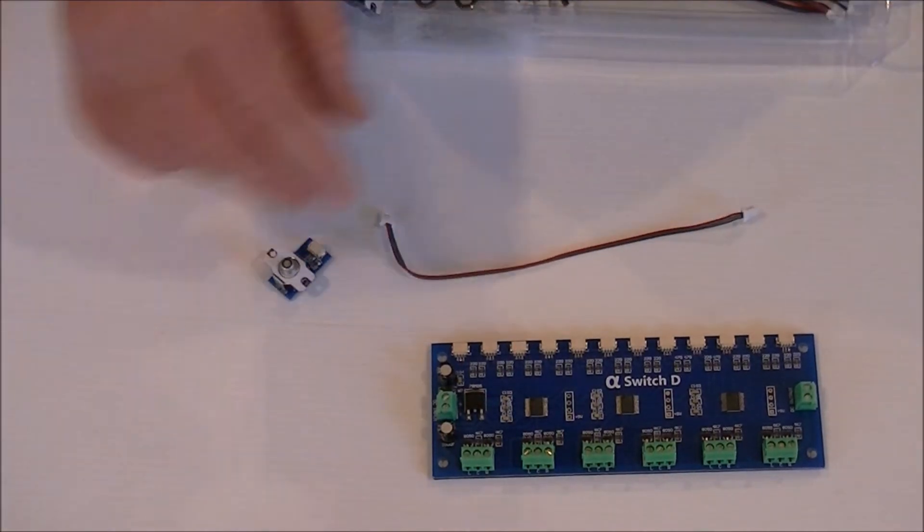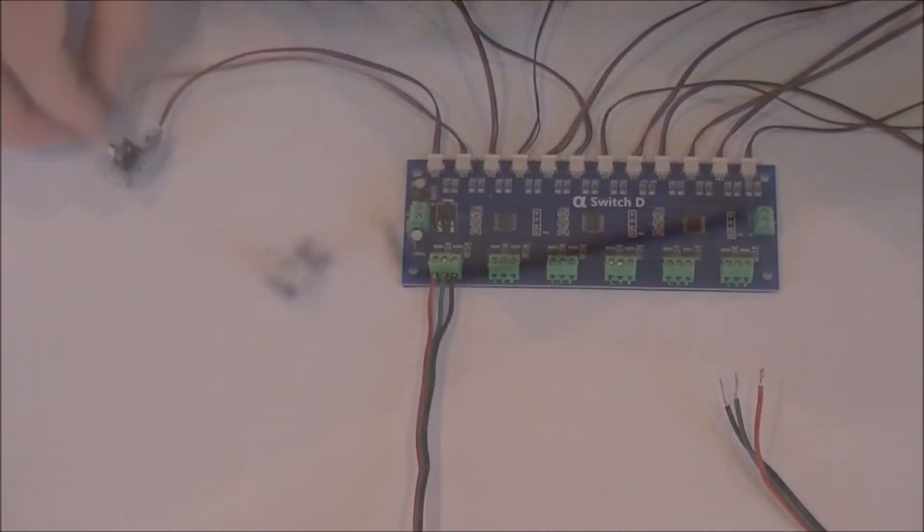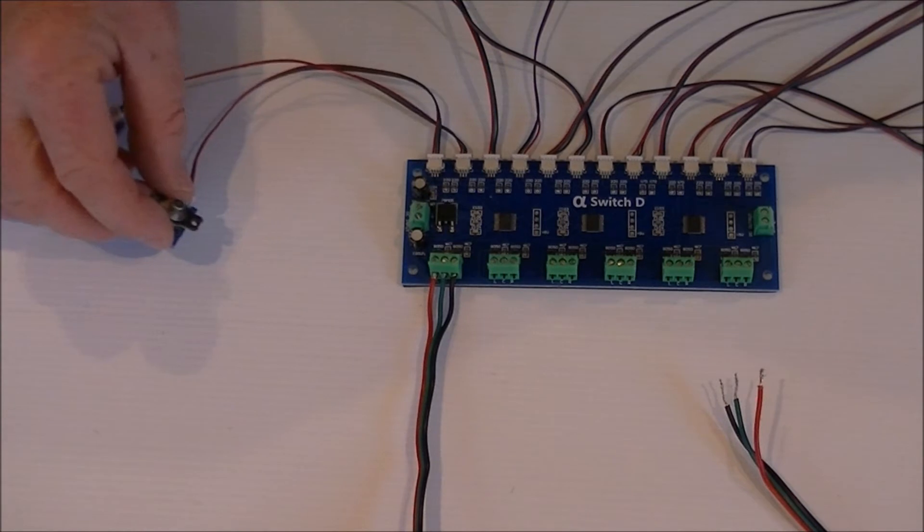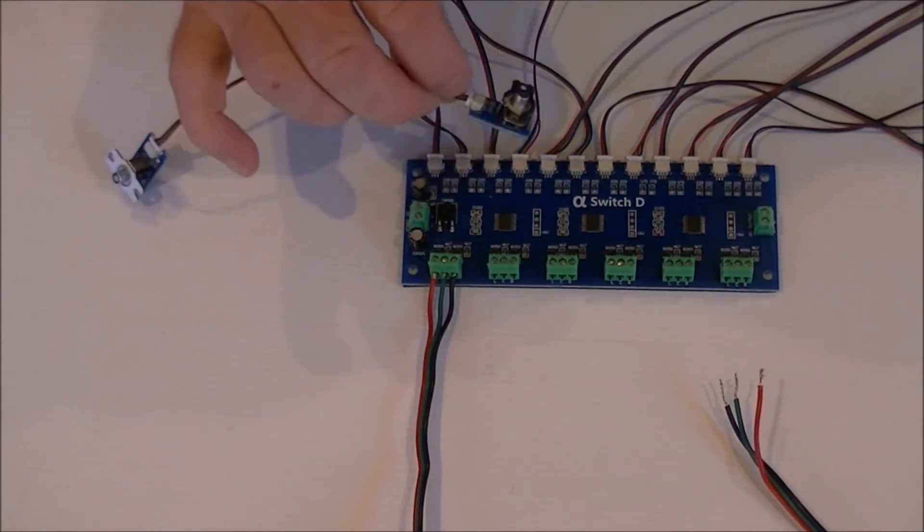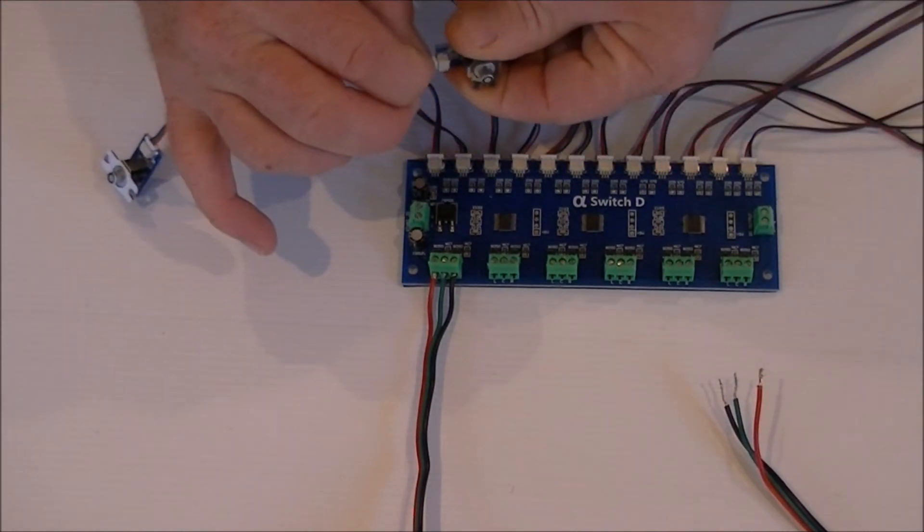So these are the wires. These go between your switch and the input on the cobalt alpha switch board. Okay, here's one I prepared earlier. I've always wanted to say that.